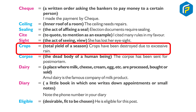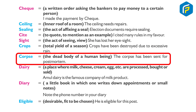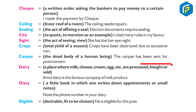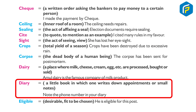Crops: total yield of a season — 'Crops have been destroyed due to excessive rain.' Corpse: dead body of a human being — 'The corpse has been sent for post-mortem.' Dairy: a place where milk, cheese, and cream are processed — 'Amul Dairy is a famous company of milk products.'